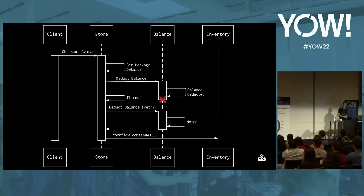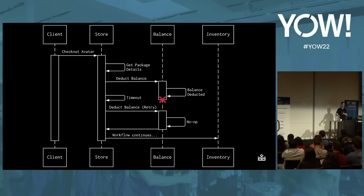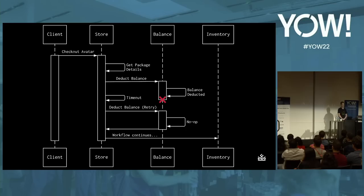Couldn't we just retry? Maybe it'll work this time. If the balance service goes down, how long before it comes back up? It could be down for a while. This could cause more and more requests to keep piling up while retrying. How many times do we keep retrying? When the balance service comes back online, we might get a flood of retrying requests all at the same time, and then it just crashes again. Retrying doesn't really seem to be the solution here.